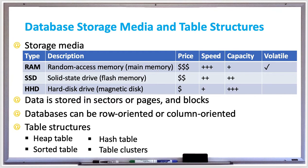When storing data on media, some considerations are the speed or transfer rate of the data being read, written, or accessed, storage capacity, and the cost per gigabyte of memory, and whether or not it's volatile or non-volatile. Volatile meaning in memory, or non-volatile meaning stored on disk.